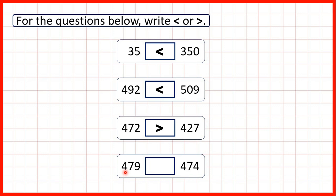Finally, let's compare 479 and 474. Both numbers have four as the hundreds digit and seven as the tens digit. So we need to move all the way along and compare our ones digits. Here we have nine ones, but in this number we only have four. So that means 479 is greater than 474.